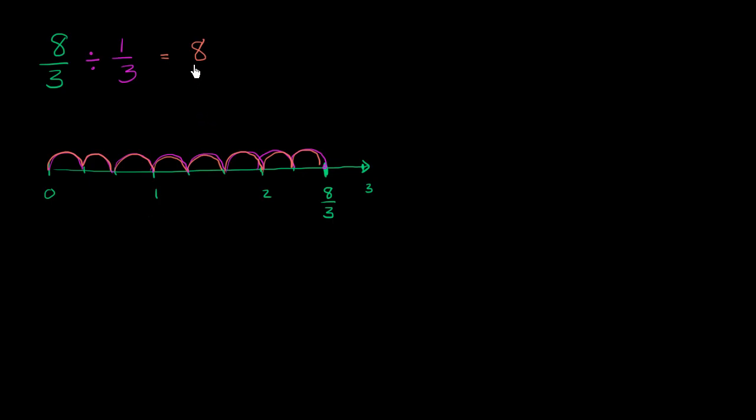Now, why does this actually make sense? Well, when you're dividing things into thirds, for every whole, you're now going to have 3 jumps. So whatever value you're trying to get to, you're going to have that number times 3 jumps. So another way of thinking about it is that 8 thirds divided by 1 third is the same thing as 8 thirds times 3.